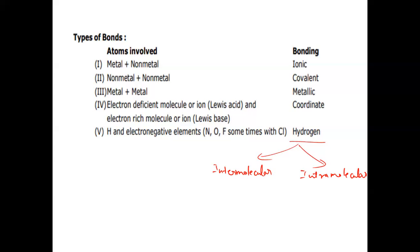Consider an example of H₂O. Here we have oxygen as the central atom, which is attached to two hydrogen atoms and has two lone pair electrons. Similarly, consider one more water molecule. In every water molecule, hydrogen is directly attached to the more electronegative element oxygen. This hydrogen of one water molecule makes a hydrogen bond with the oxygen of the adjacent water molecule, and hydrogen bonding is represented by a dotted structure. This type is known as intermolecular hydrogen bonding.